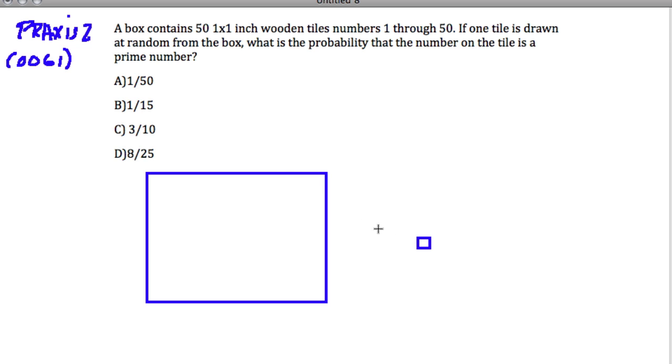You don't want a box containing one tile this large, one tile that large, because for obvious reasons, your chance of gaining this big tile is more likely than gaining this small tile, even though there are only two. Because one is larger than the other. So you want to always establish that they're the same size. It says, if one tile is drawn at random from the box, what is the probability that the number on the tile is a prime number? Great, that's a fun question.